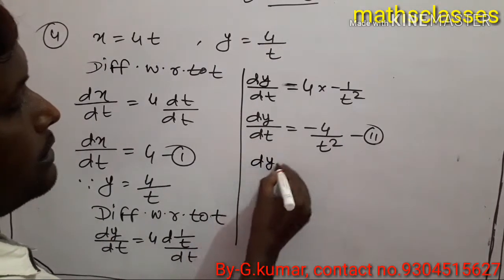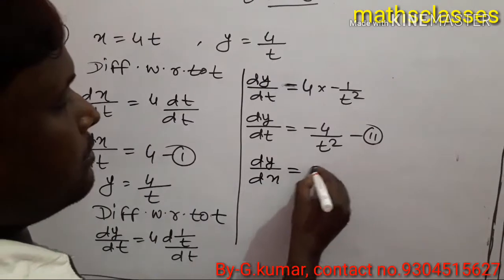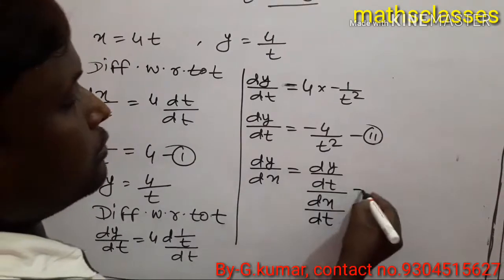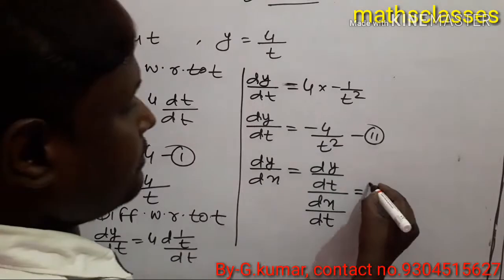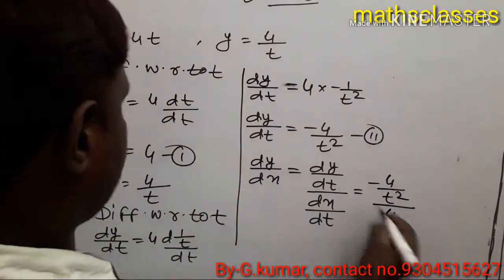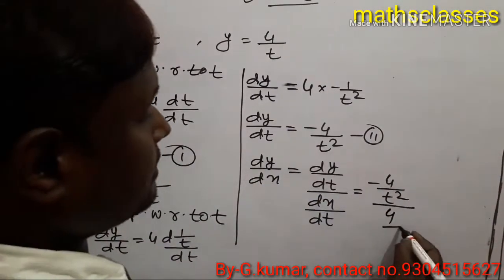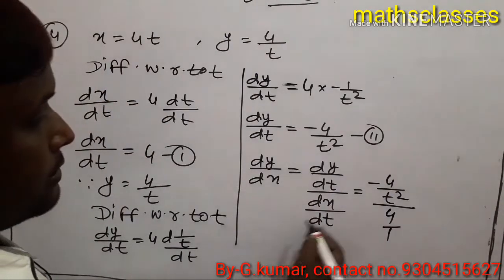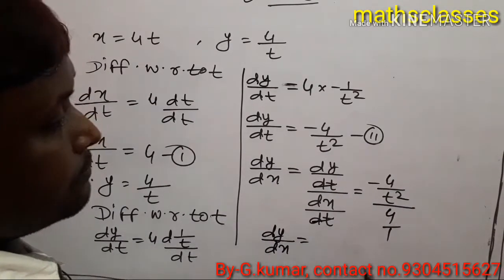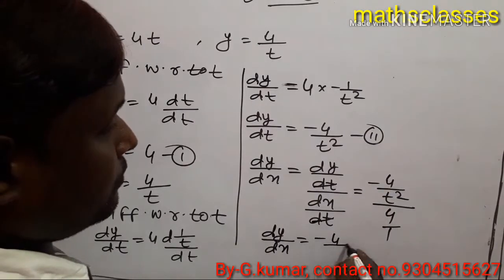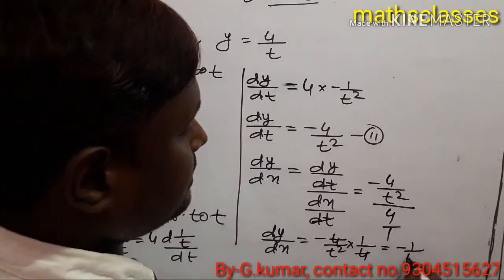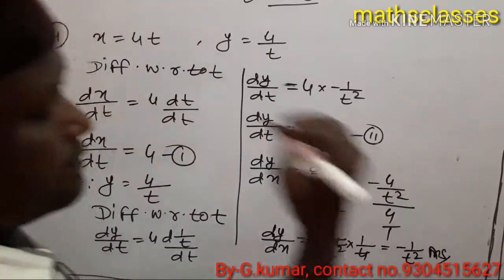Now to find dy by dx, we use dy by dx equal to dy by dt upon dx by dt. So dy by dx equals minus 4 by T square divided by 4. The 4's cancel, giving dy by dx equal to minus 1 by T square. This is the answer.